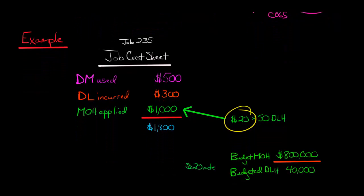Maybe for this company, they budgeted manufacturing overhead of $800,000. They were going to apply manufacturing overhead on the basis of direct labor hours, and they thought there'd be 40,000 direct labor hours. So that comes out to a rate of $20 per direct labor hour. Let's assume this job had 50 direct labor hours, so 50 times 20 is $1,000. Then we get to a total cost for the job of $1,800.